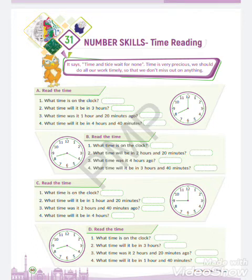The time will be exactly 12 o'clock. Now come to part C. What time is it? It is 9 o'clock. And what time will it be in 1 hour and 20 minutes? 9 o'clock plus 1 hour and 20 minutes means it will be 10:20.